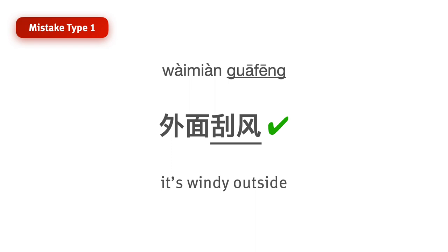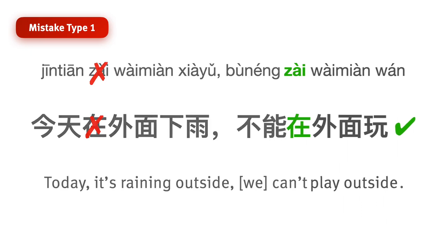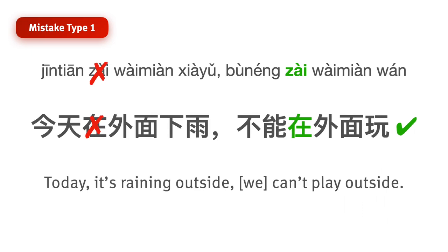But if you're describing some kind of action — for example, playing — you should say 在外面玩, meaning 'play outside.' For example: 今天外面下雨，不能在外面玩. Today it's raining outside, so we can't play outside.